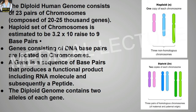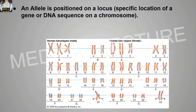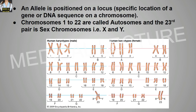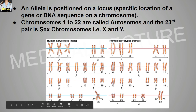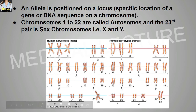The diploid genome consists of two alleles of each gene, as you can see. An allele is actually positioned on a locus. A locus is a specific location of a gene or DNA sequence on a chromosome. Chromosomes 1 to 22 are called autosomes, and the 23rd pair is the sex chromosome, that is X and Y. We will discuss more important notes in our next video — thank you.